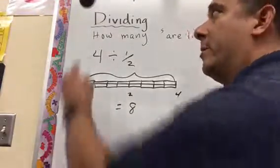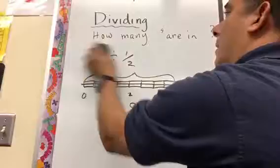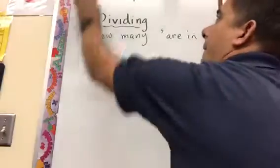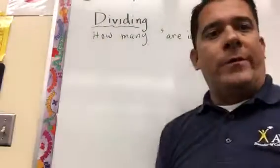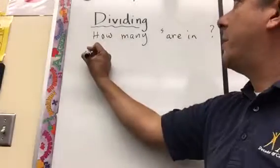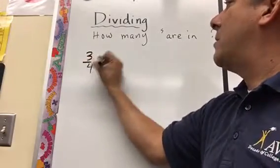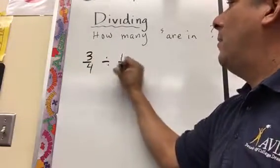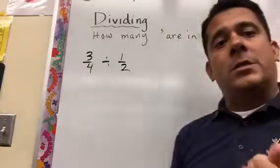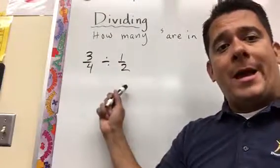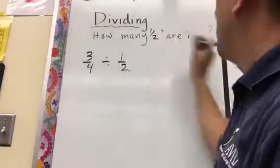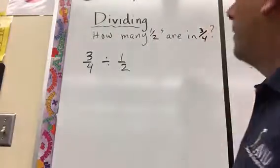Now, when both numbers are fractions, then it's a better way of understanding it. Let's look at the term 3 fourths divided by 1 half. Now the question still remains, how many halves are in 3 fourths?